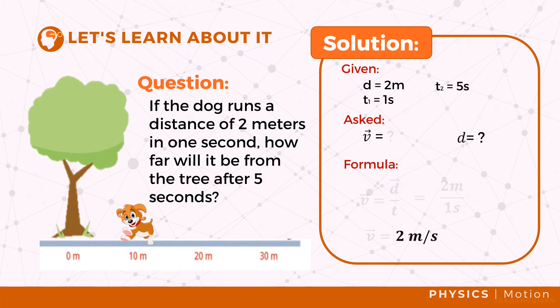To solve for the distance, we can use the formula: distance is equal to the product of velocity and time. Substitute the values for velocity, which is equal to two meters per second, times the time, which is equal to five seconds. With this, we can cancel the unit of time and that leads up to a distance of 10 meters.